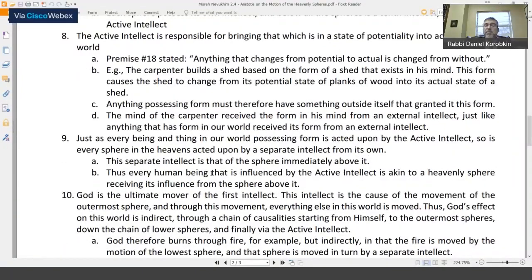So point number nine is just as every being and thing in our world possessing form is acted upon by the active intellect, so is every sphere in the heavens acted upon by a separate intellect from its own. After the Rambam had gotten through explaining us that every sphere has its own intelligence that causes it to desire and want to move, it's also acted upon by a separate intelligence that is external to itself. What is that external intelligence? This separate intellect is that of the sphere immediately above it or outside of it, and thus every human being that is influenced by the active intellect is akin to a heavenly sphere, is analogous to a heavenly sphere receiving its influence from the sphere immediately above it.